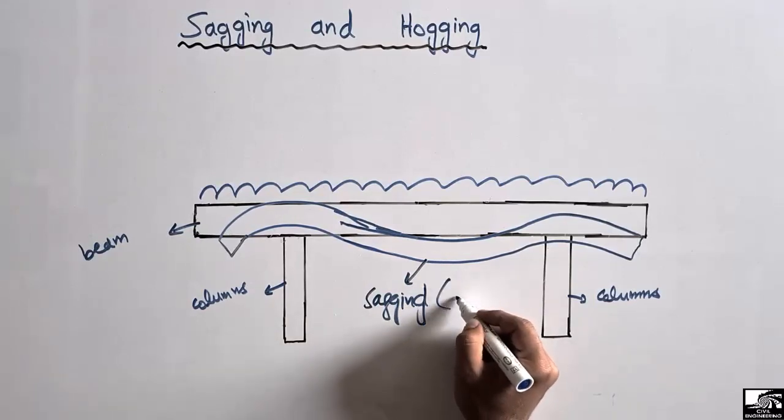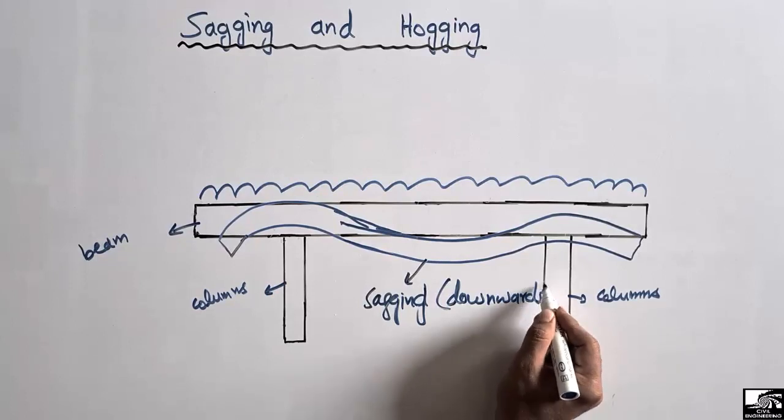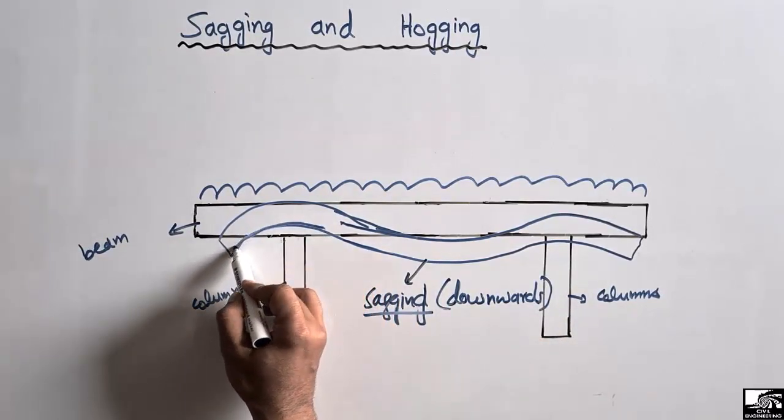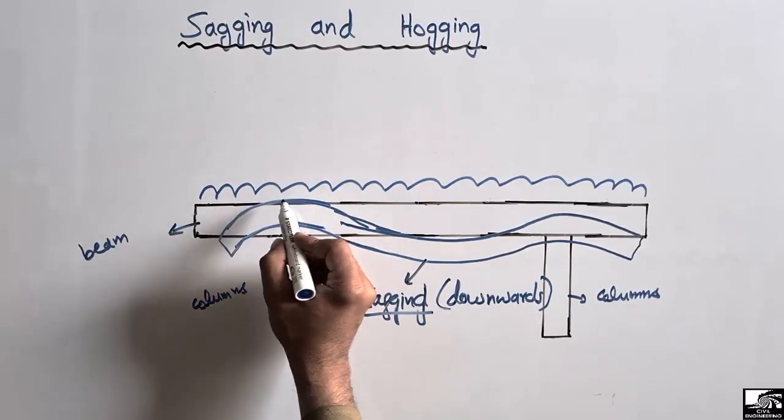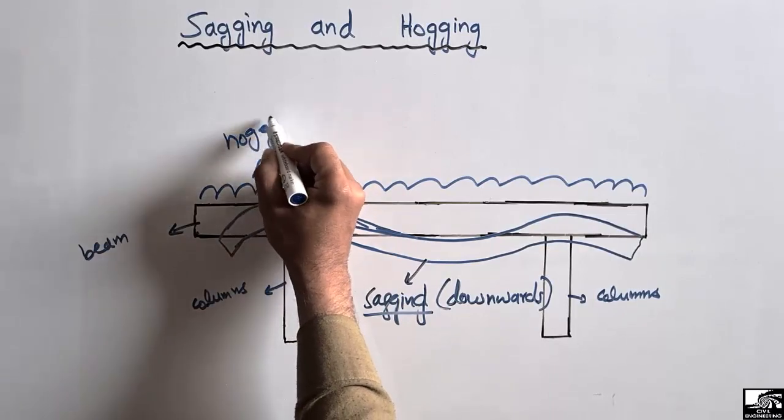When the beam bends in downward position, such type of bending is called sagging. While when the beam bends in the upper direction, such bending is known as hogging. This is the main difference between sagging and hogging of the beam.